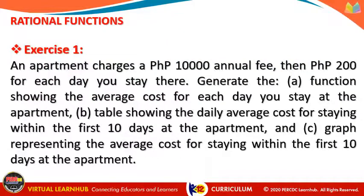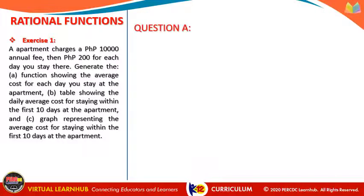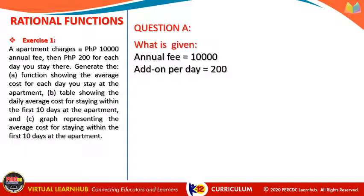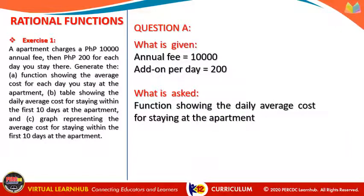Alright, let's now go to our exercises. Question number one: an apartment charges a Php 10,000 annual fee, then Php 200 for each day you stay there. Generate the following: first, a function showing the average cost for each day you stay at the apartment. It is given that the annual fee is Php 10,000 and the add-on per day is Php 200. What is asked is a function showing the daily average cost.